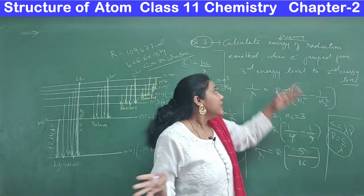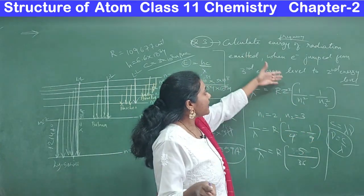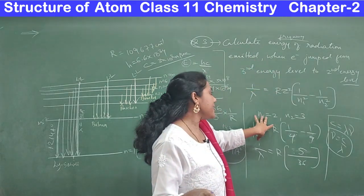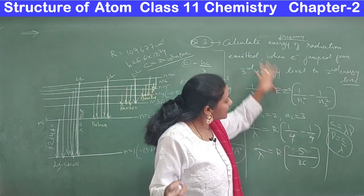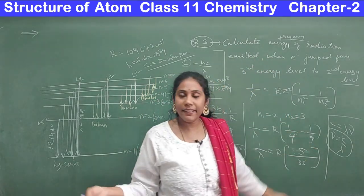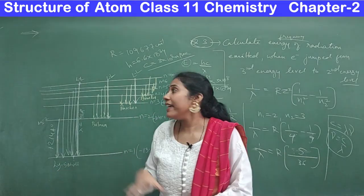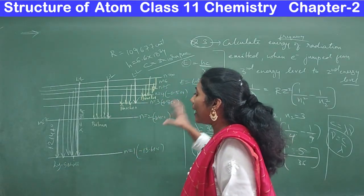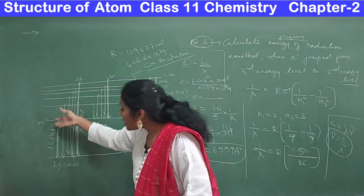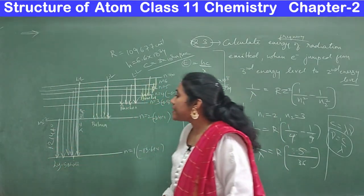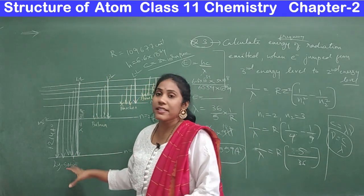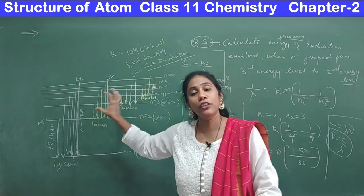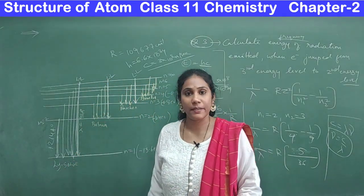You must be very careful with n₁ and n₂ values. Always take the lowest number as n₁ and the highest number as n₂. When the question specifies the first line or limiting line of a series, you must understand the concept clearly to assign the correct values.